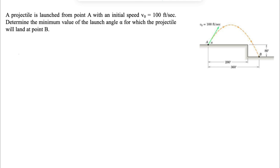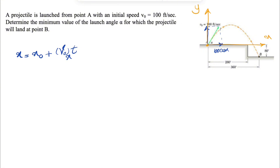We have two different motions, one in the X and one in the Y direction. For X motion, we have the formula X equals initial position plus the initial velocity in the X direction. We can resolve this velocity into two components: 100 cosine of alpha for X, and 100 sine of alpha for Y, with point A as our origin.